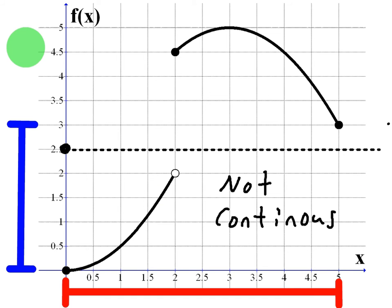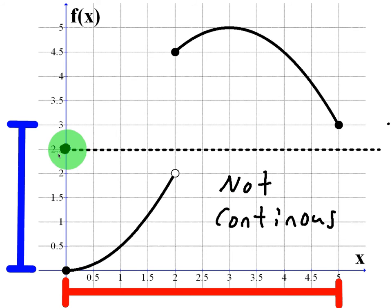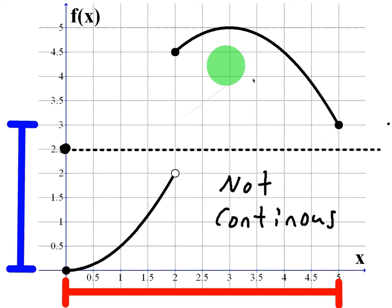Now let's take a look at where this might not work. Here we have a graph. The horizontal interval is 0 to 5. The vertical interval goes from 0 to 3, the y-value of this endpoint. Now, for a lot of these y-values it will work — if we pick 1.5 and go over and go down, we'll have a corresponding x-value. However, let's try 2.5. If we try to go over, we will not hit the graph. So there will be no corresponding x-value for y = 2.5. Why? Because there's a break in this graph — it's not continuous. This illustrates that the function has to be continuous in order for the Intermediate Value Theorem to apply.